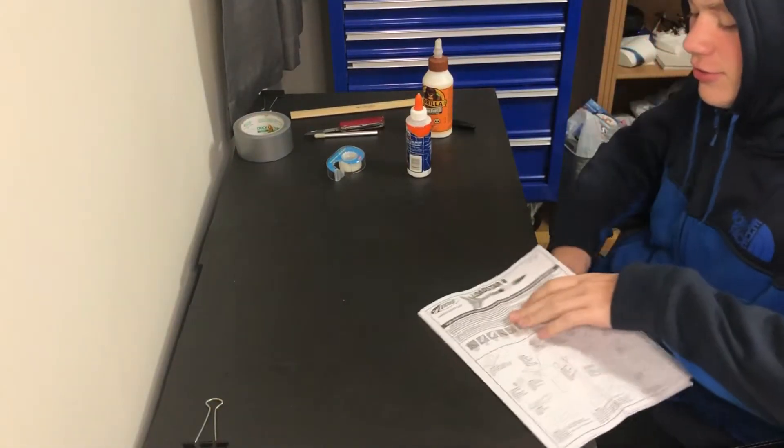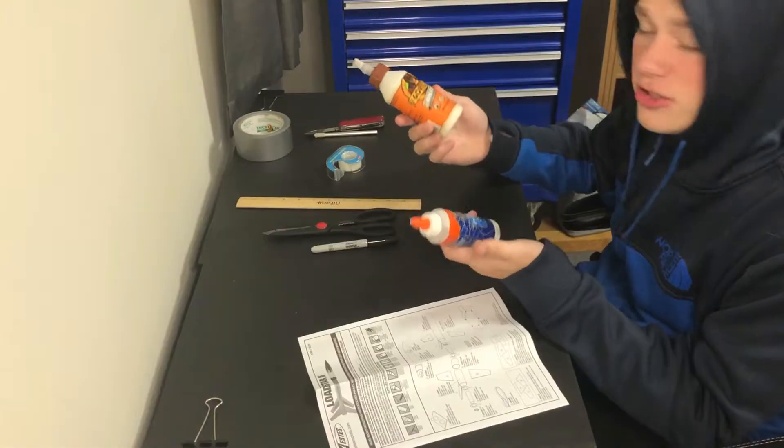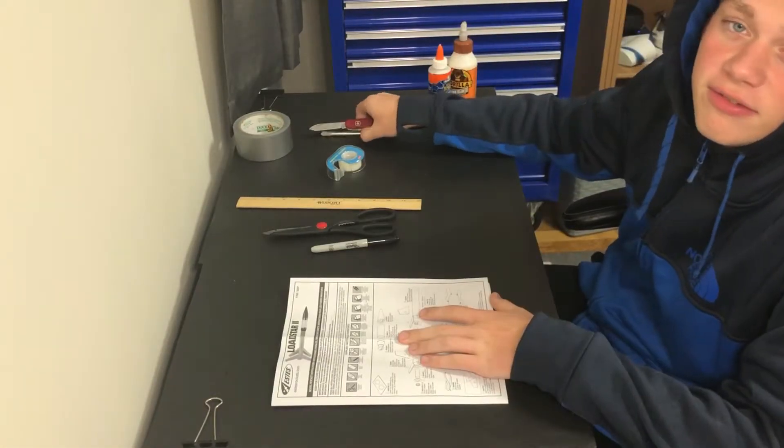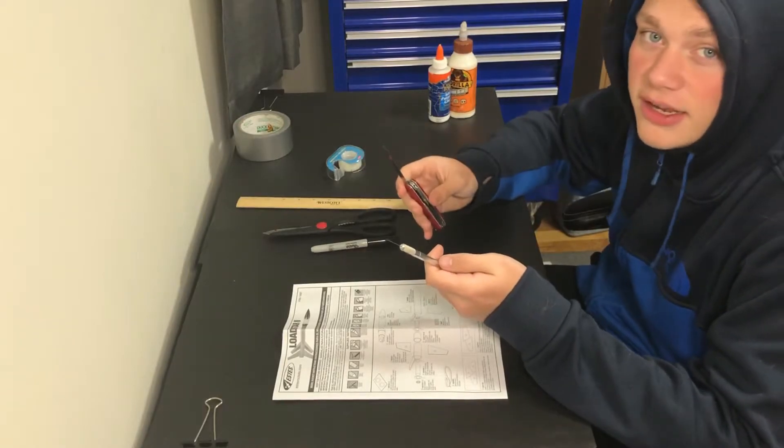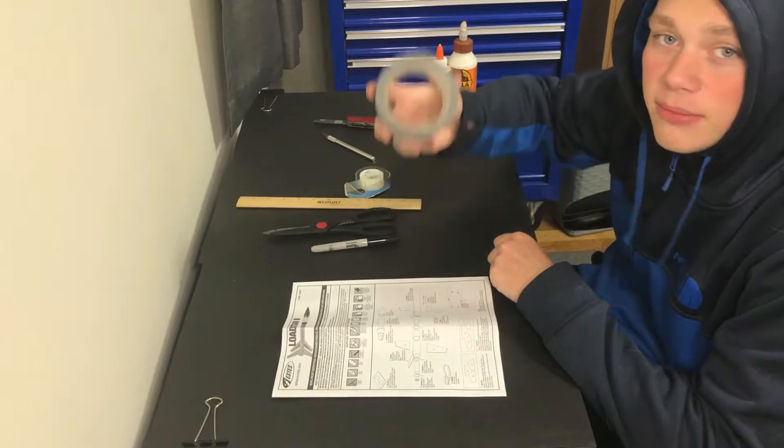Hello everyone, today I'm going to be showing you how to build the Lodestar 2 rocket. You're going to need some tools: scissors, doesn't matter what type of glue you use, a knife (you can use a hobby knife or any knife with a thin blade), and some tape (scotch tape, clear masking tape, or I'm going to use duct tape).